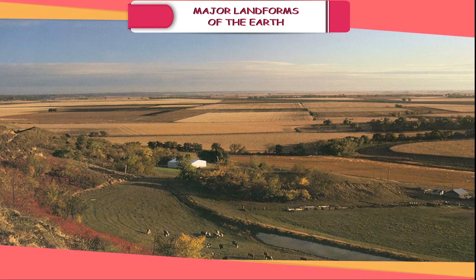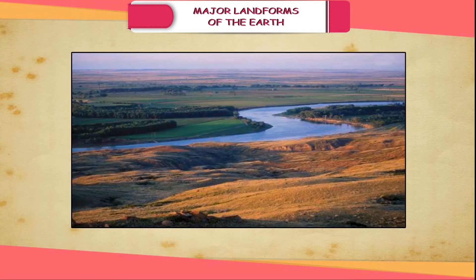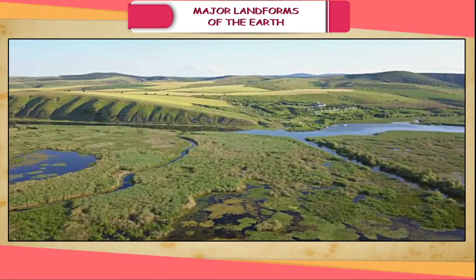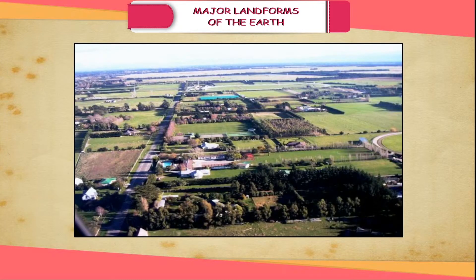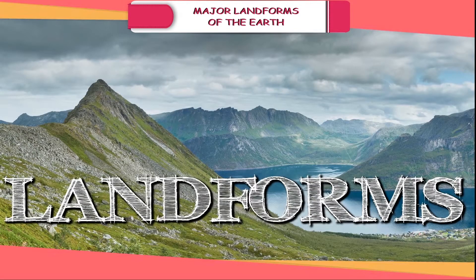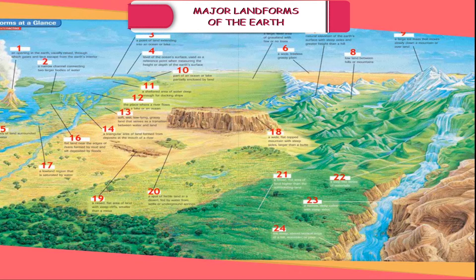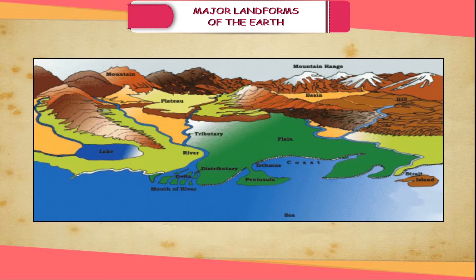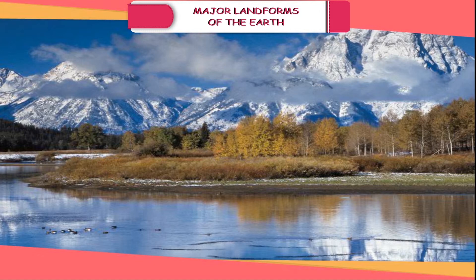Plains are very thickly populated regions of the world. Some of the largest plains made by rivers are found in Asia and North America. High concentration of people in plains is due to the availability of land for building houses as well as the fertile area for cultivation of crops. People have been living in all types of landforms since the beginning of their evolution, but rivers were the cradles of civilization as civilizations flourished near river valleys.